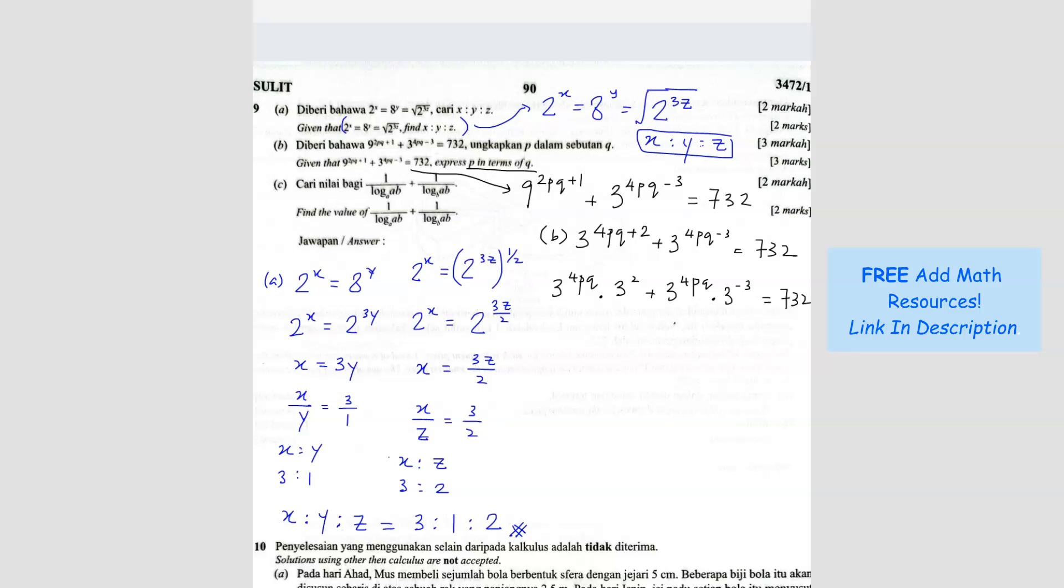Now I can factorize the 4pq. So when I factorize 3^(4pq), when I factorize what I have left is 3^2 and also 3^(-3). So 3^2 plus 3^(-3) equals 732. What is the answer for that? When you count this, you can use your calculator, you should get 244 over 27 equals 732.